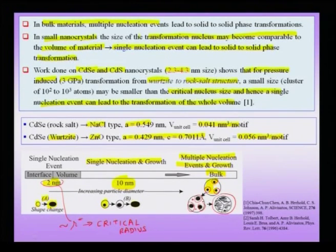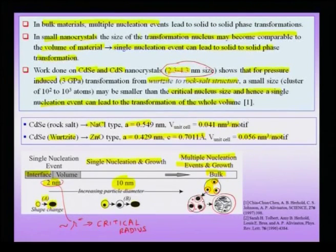Looking more closely at the ~2 nanometer size crystals — consistent with the experimental study range of 2.3 to 4.3 nanometers — this region can be subdivided into very small sizes where nucleation is interface (surface) controlled, and a slightly larger volume-controlled regime. To summarize: since R* is of the order of nanometers (typically 1–10 nm), a single nucleation event can lead to a phase transformation in systems like CdSe or CdS, which is unlike bulk crystals.